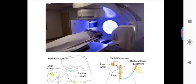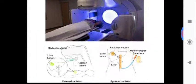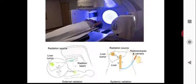Radiation therapy is of two types: external radiation therapy and systemic radiation therapy. In external radiation therapy, if you have a tumor, the radiation is directed to that particular place, such as the liver.